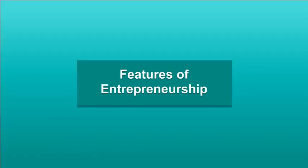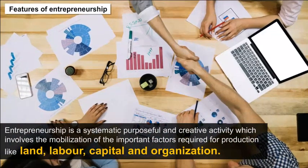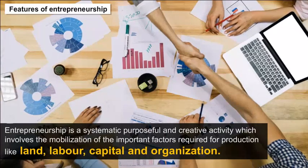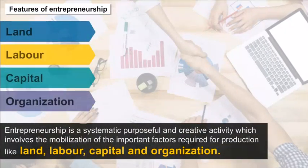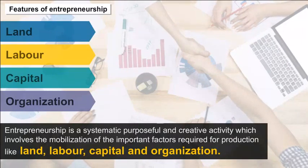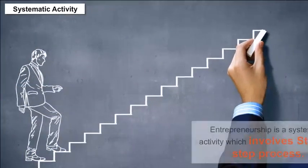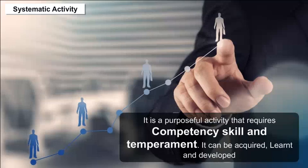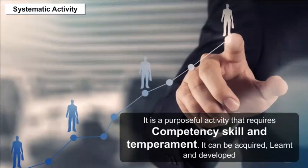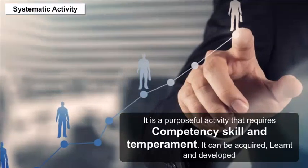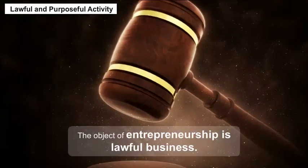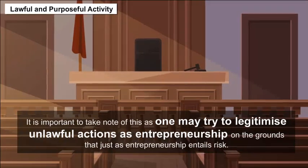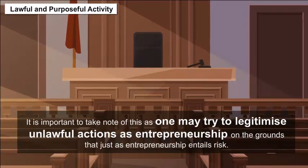Features of Entrepreneurship. Entrepreneurship is a systematic, purposeful and creative activity which involves the mobilization of important factors required for production, like land, labor, capital and organization. As a systematic activity, it involves a step-by-step process. It is a purposeful activity that requires competency, skill and temperament, and it can be acquired, learnt and developed. As a lawful and purposeful activity, the object of entrepreneurship is lawful business.